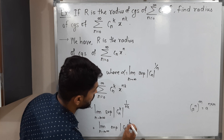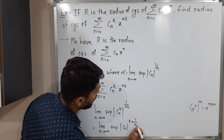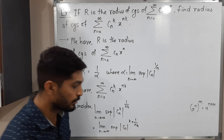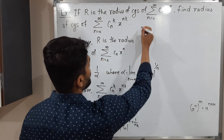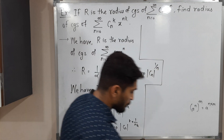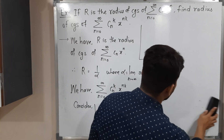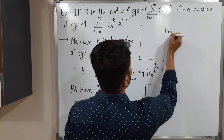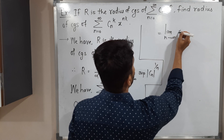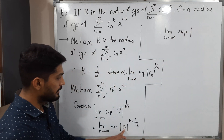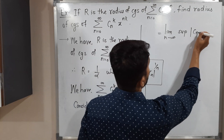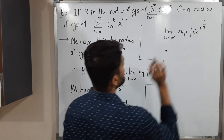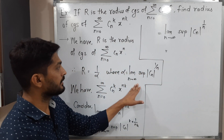So we have cₙ raised to k into 1 by nk. As a result, that k and 1 by k cancel each other. So this equals limit n tends to infinity, supremum of mod cₙ raised to 1 by n, after cancelling k.